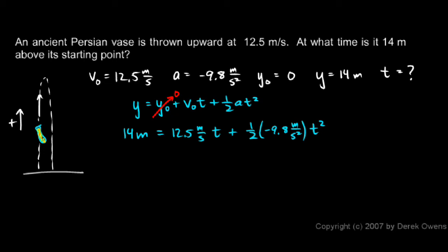Once again, we're trying to find t. Everything in here is known. We have numbers in here for everything, except we don't know t. And t shows up twice. So we can use the quadratic equation once again.